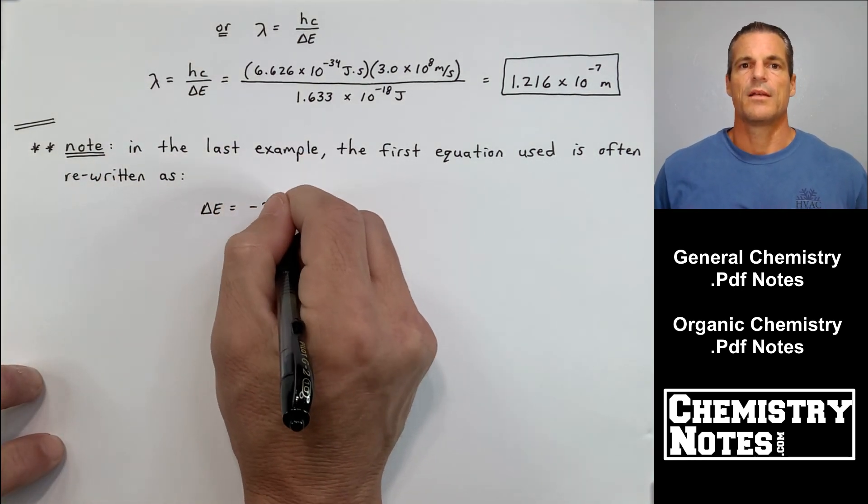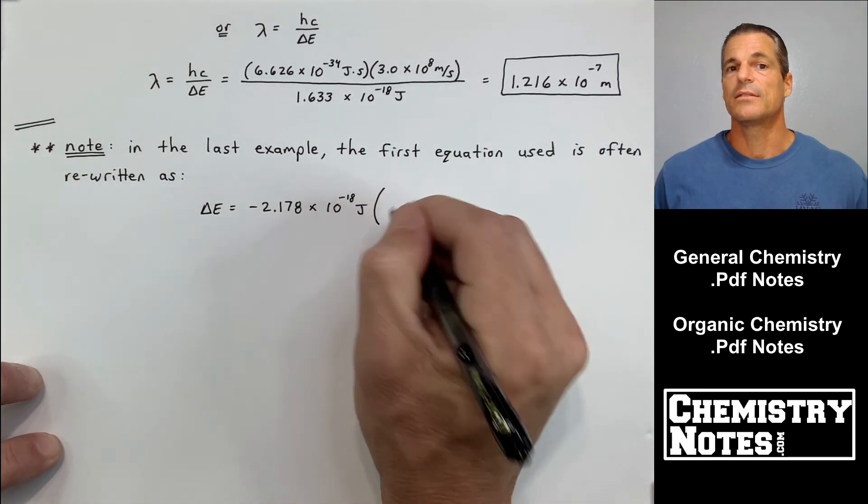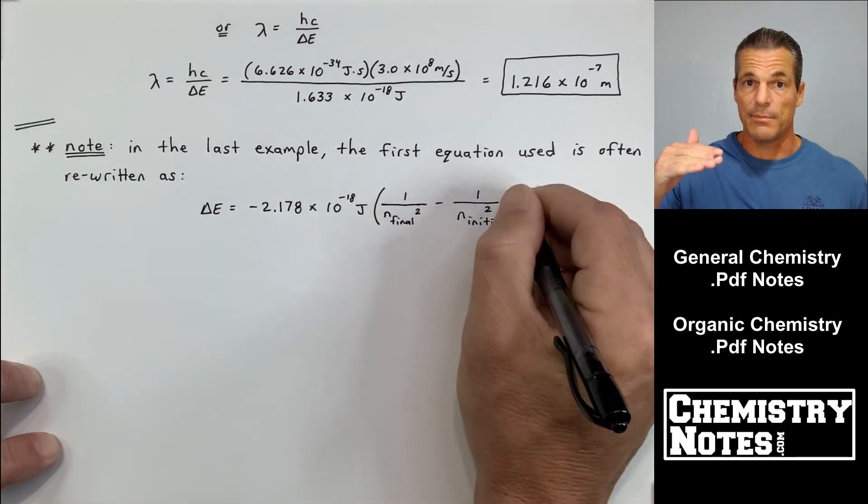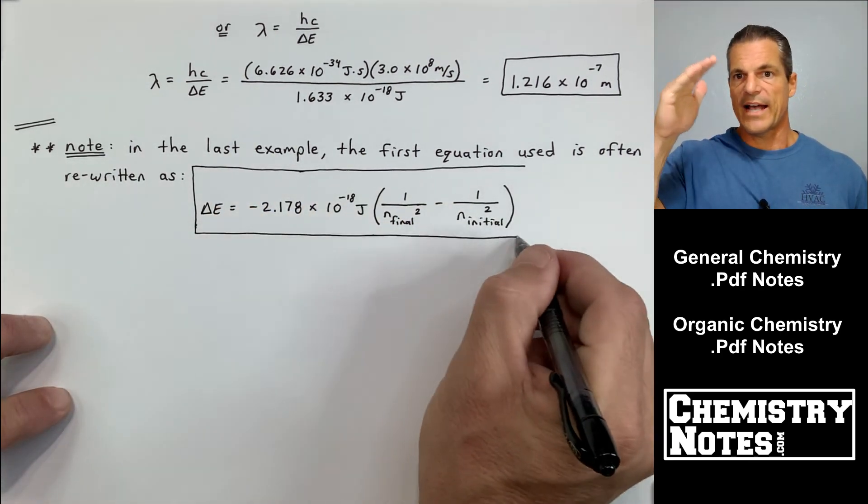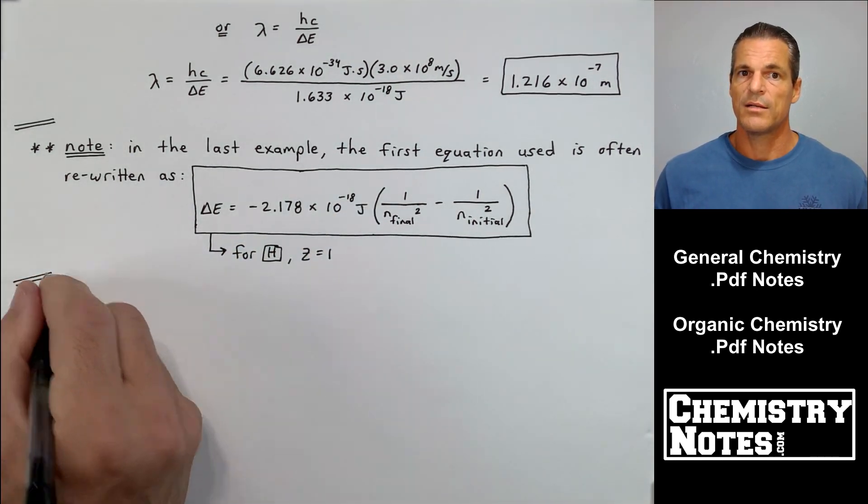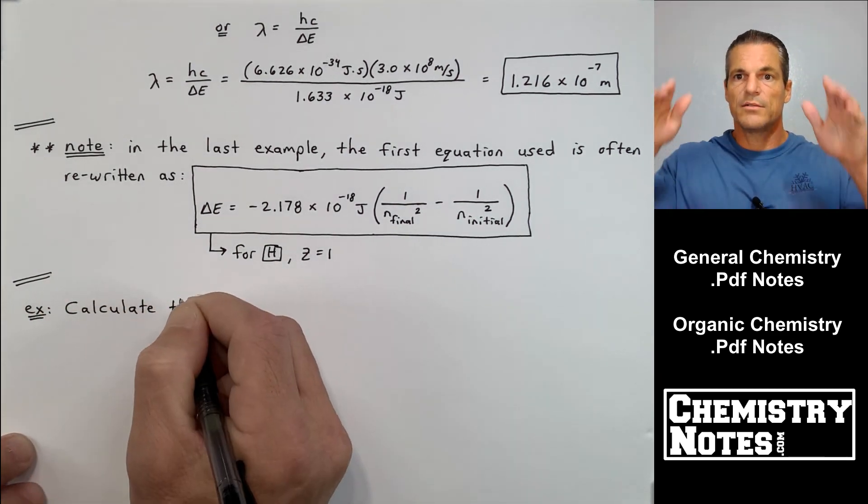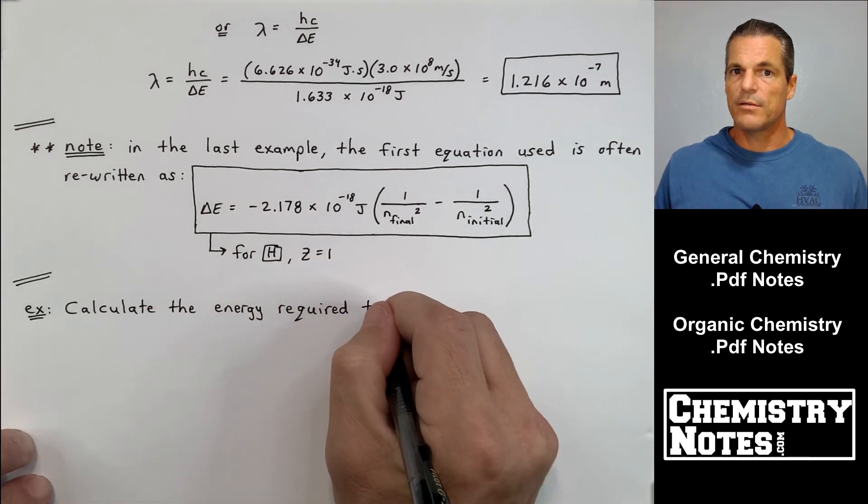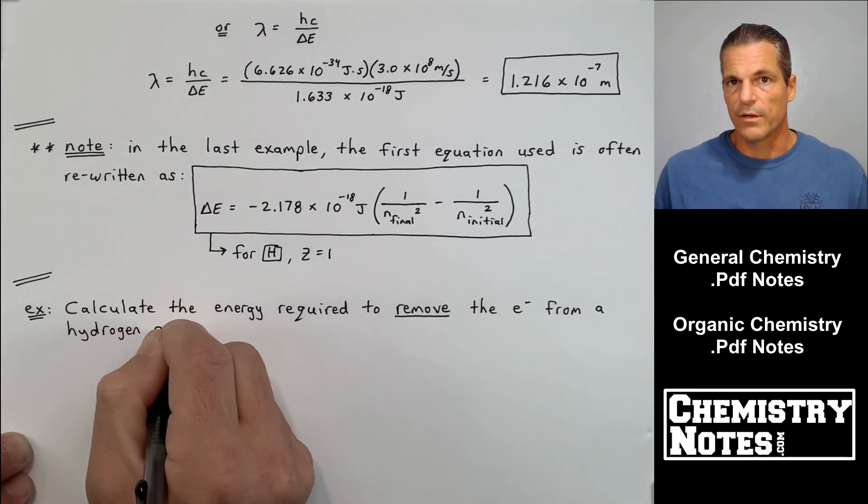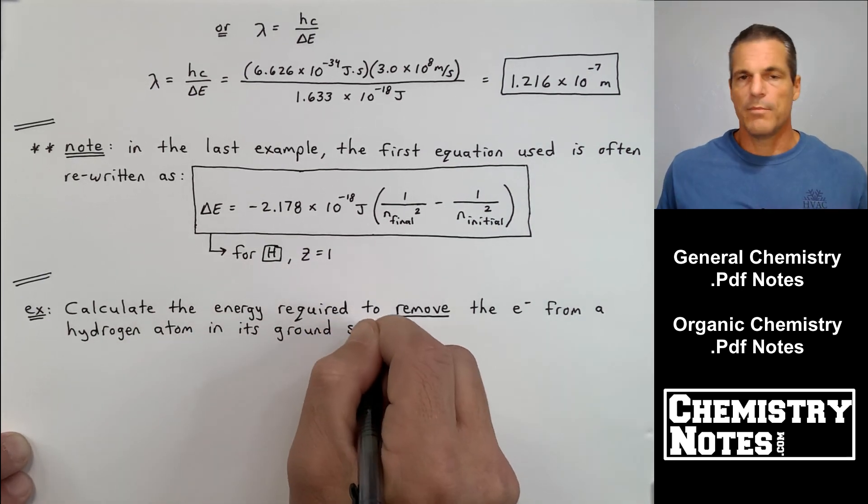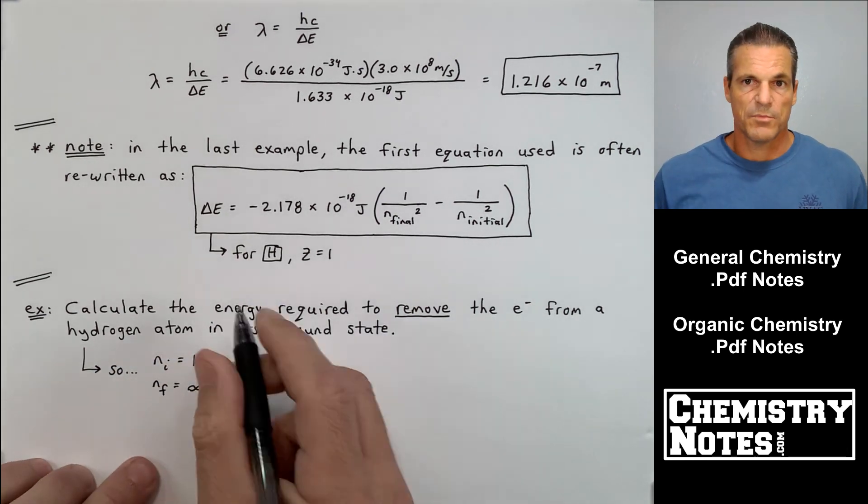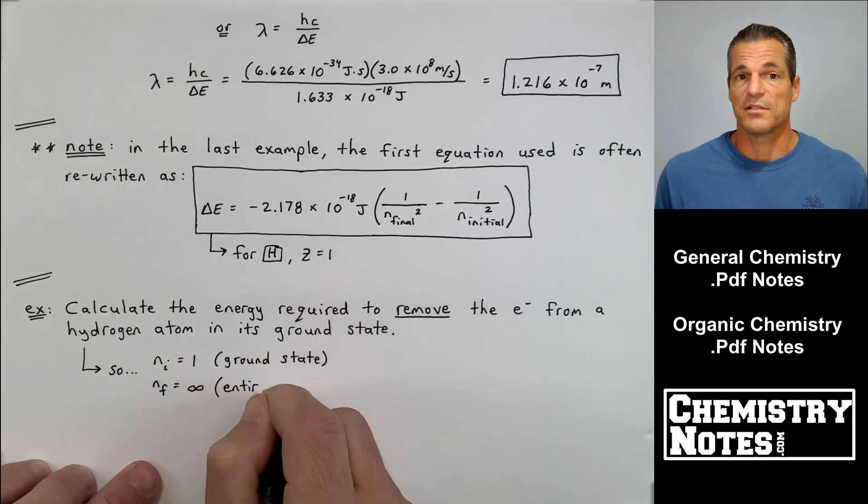Note, in the last example, the first equation used is often rewritten as the following. Because you're never really involved with just one single n-equal state. Usually you're absorbing energy and going up, or you're relaxing back down when you emit. So we have an equation that's much more functional here. Delta E equals minus 2.178 times 10 to the minus 18th joules times parentheses 1 over n final squared minus 1 over n initial squared. For hydrogen, Z equals 1. For the most part, with these problems in general chemistry, they want us to do these problems in regards to hydrogen.